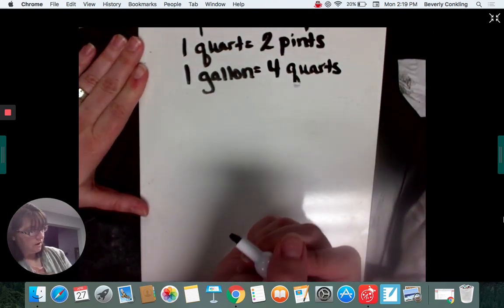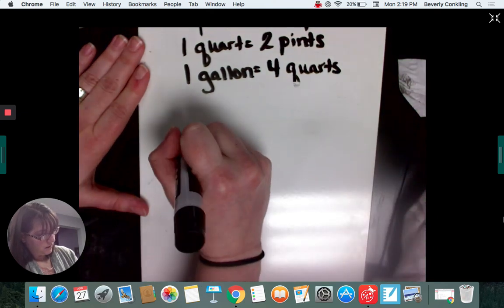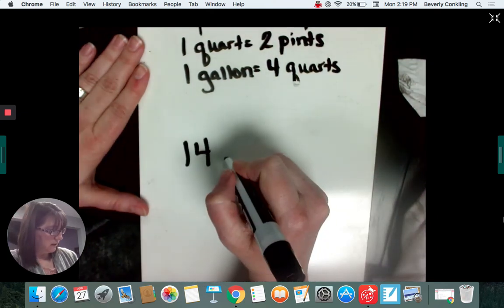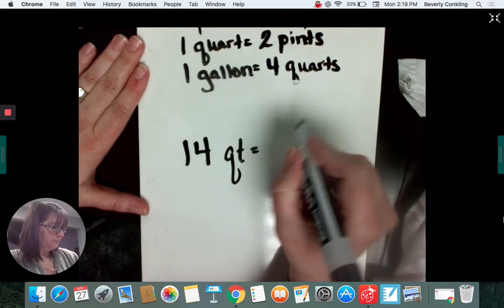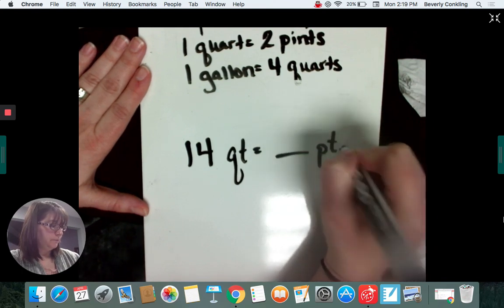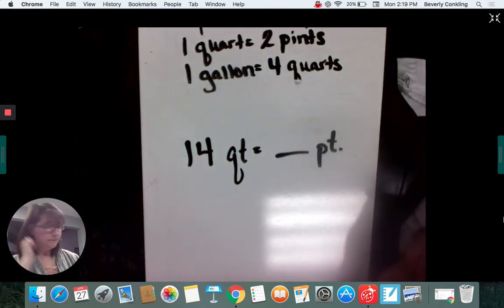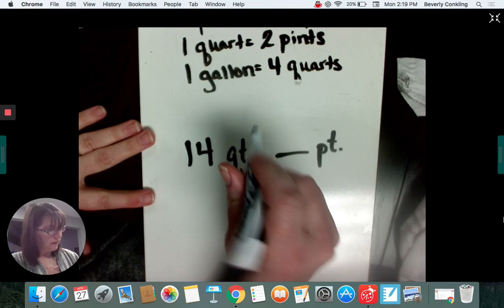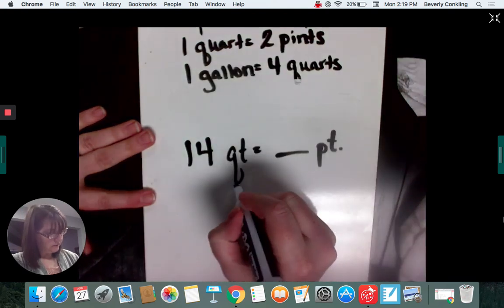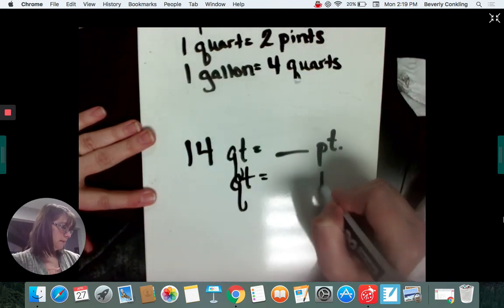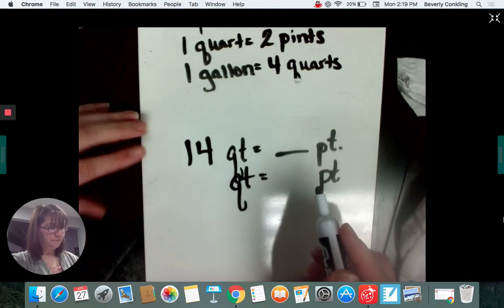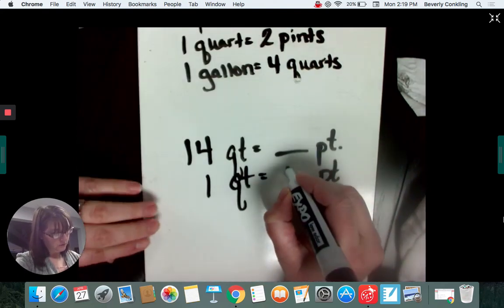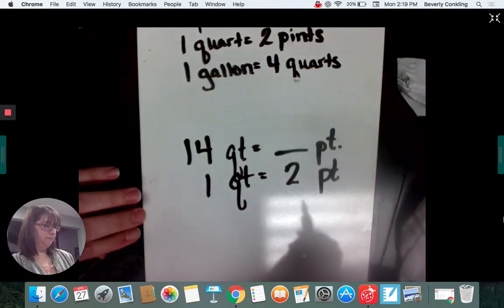What if I have 14 quarts, and I want to know how many pints that makes. Well, here's my quarts, here's my pints. Quarts under quarts, pints under pints. One quart equals two pints.